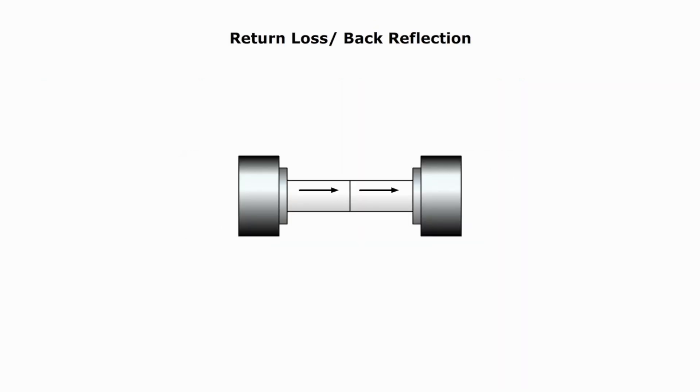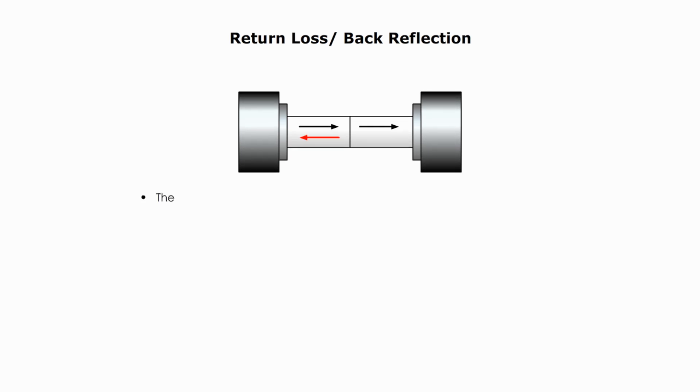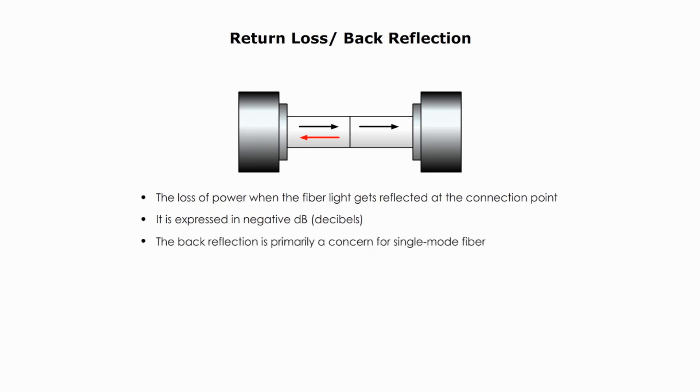Return loss, or the loss caused by back reflection, is the signal power loss when the fiber light gets reflected at the connecting point. It is expressed in negative decibels. The back reflection is primarily a concern for single-mode fiber. This occurs most often at connector interfaces. Reasons include but not limited to dirty connector and poorly mated connectors.